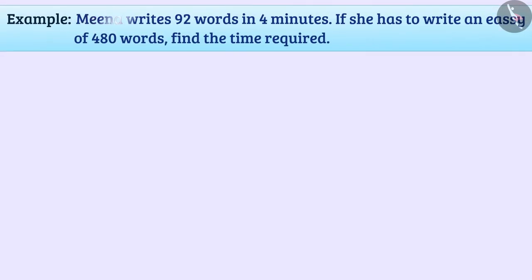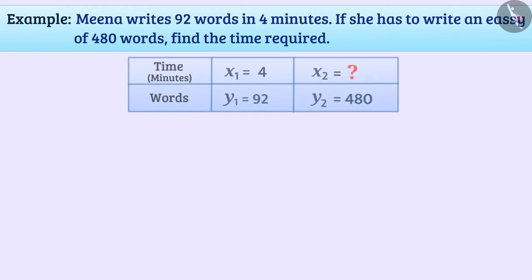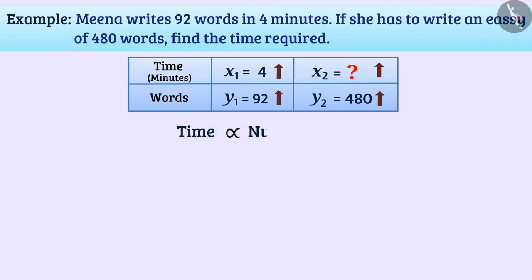Let us now see the next example. Meena writes 92 words in 4 minutes. If she has to write an essay of 480 words, find the time required. For the given situation, we can make a table like this, where x2 is the time required to write 480 words. We know that the time required will increase in the same ratio as the number of words increases. So here, time is directly proportional to the number of words.